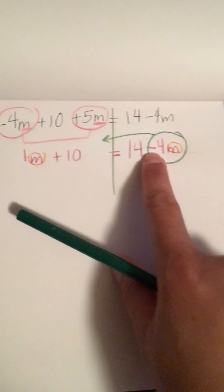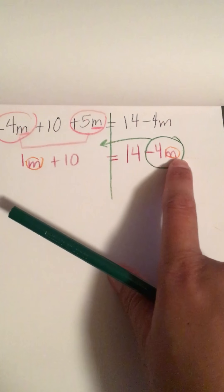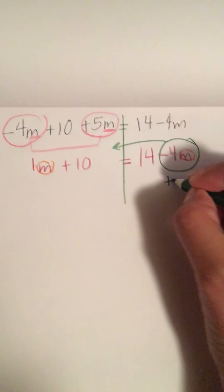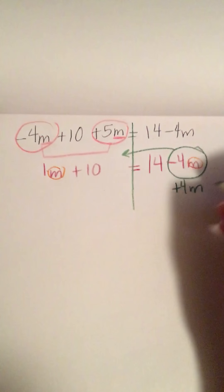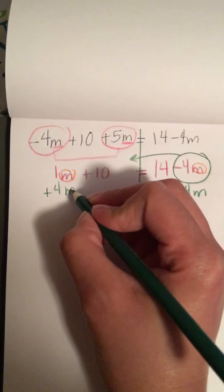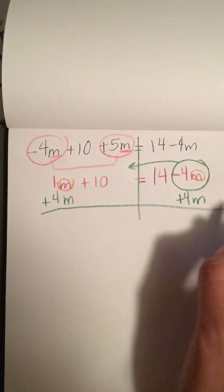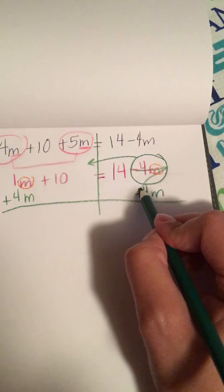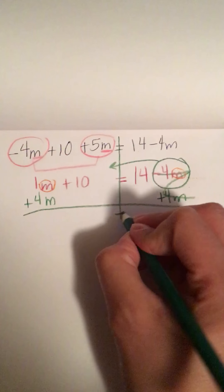Remember to move it you either subtract or add. Here it's a minus 4M, so to move it to the other side I do the opposite and do plus 4M. And what I do to one side I do to the other. Notice how I align it below the M's because it belongs with the M's.